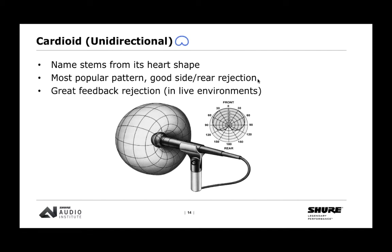The cardioid pattern, also known as unidirectional, is the most popular pattern for all microphones — the name comes from the Latin for heart. It's a good balance between side and rear rejection while having some forgiveness if you're slightly off axis on the front end. It offers great feedback rejection in live environments due to its rear rejection. Looking at the polar pattern, from the rear it has the most rejection of all the patterns.